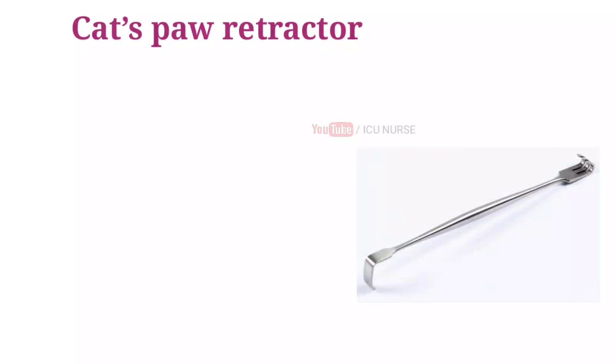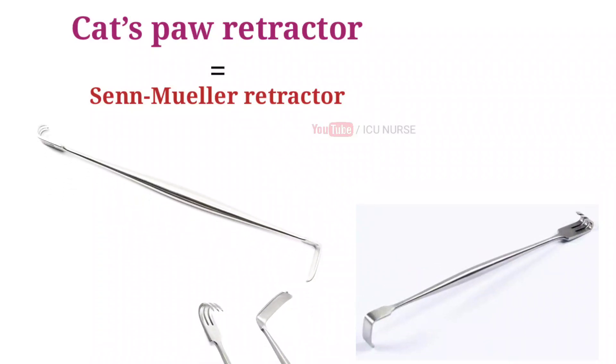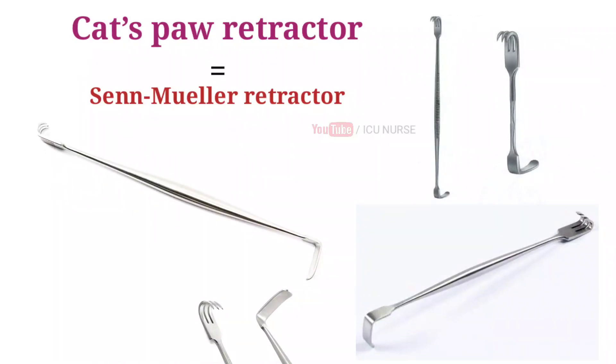Cat Spar Retractor is also known as Senmuller Retractor. It is a double-ended small retractor for skin retraction in small and delicate wounds. Single-use disposable cat paw retractor is used to retract the skin during minor operations. This instrument is used in removing small lumps and bumps just under the skin.